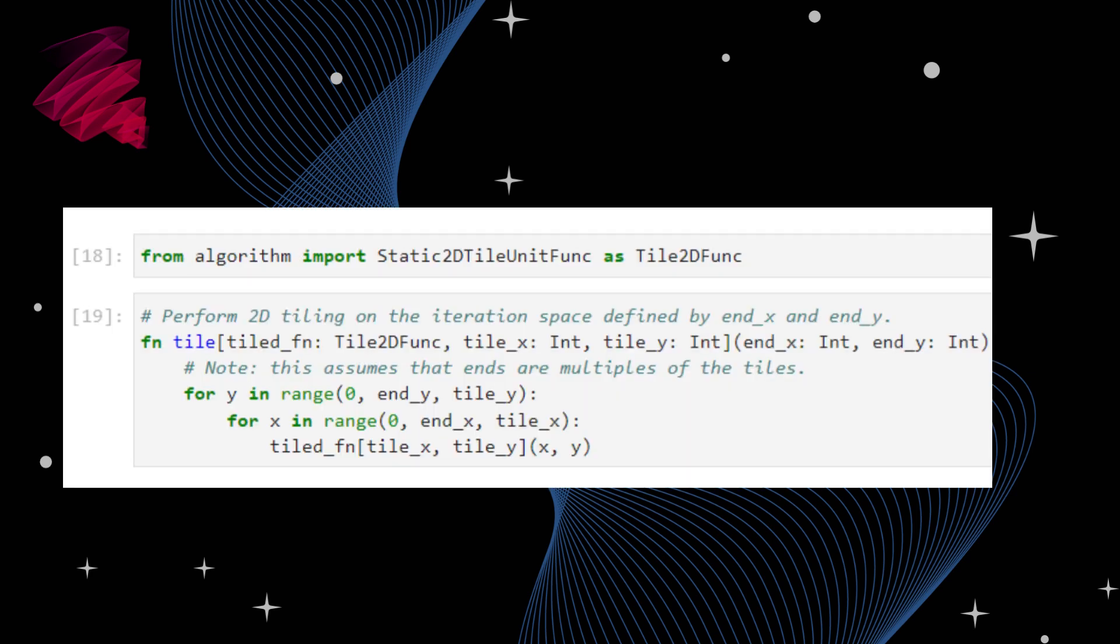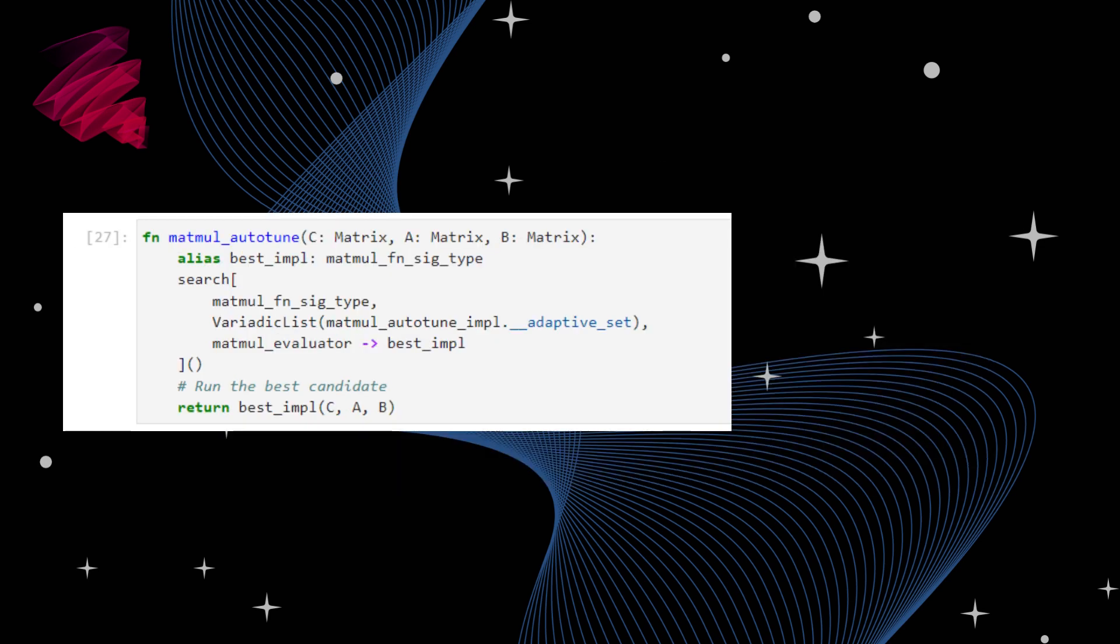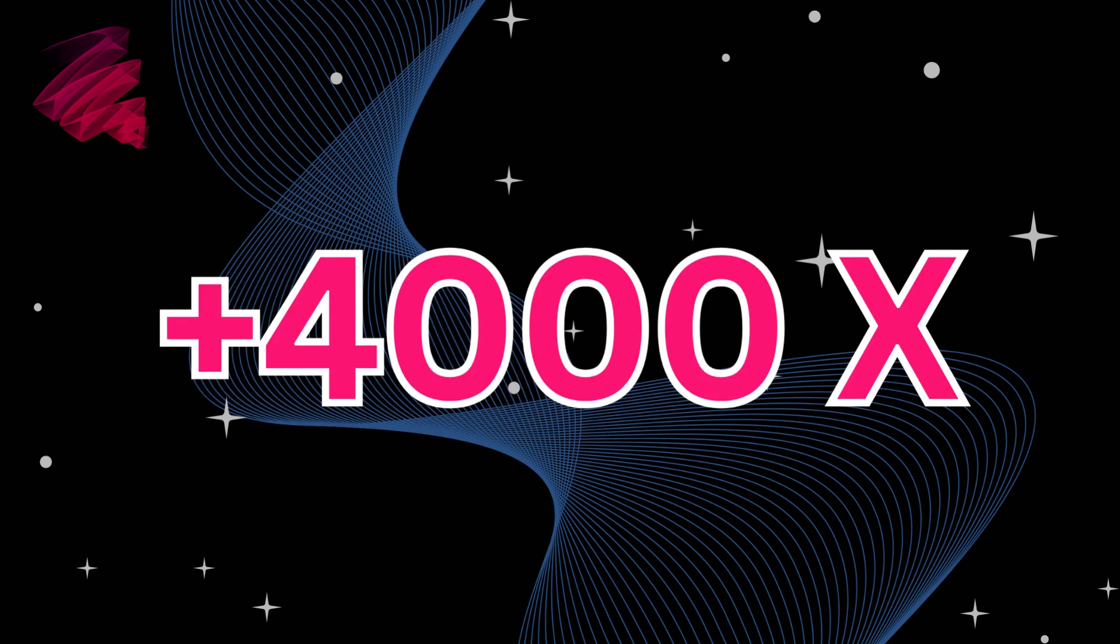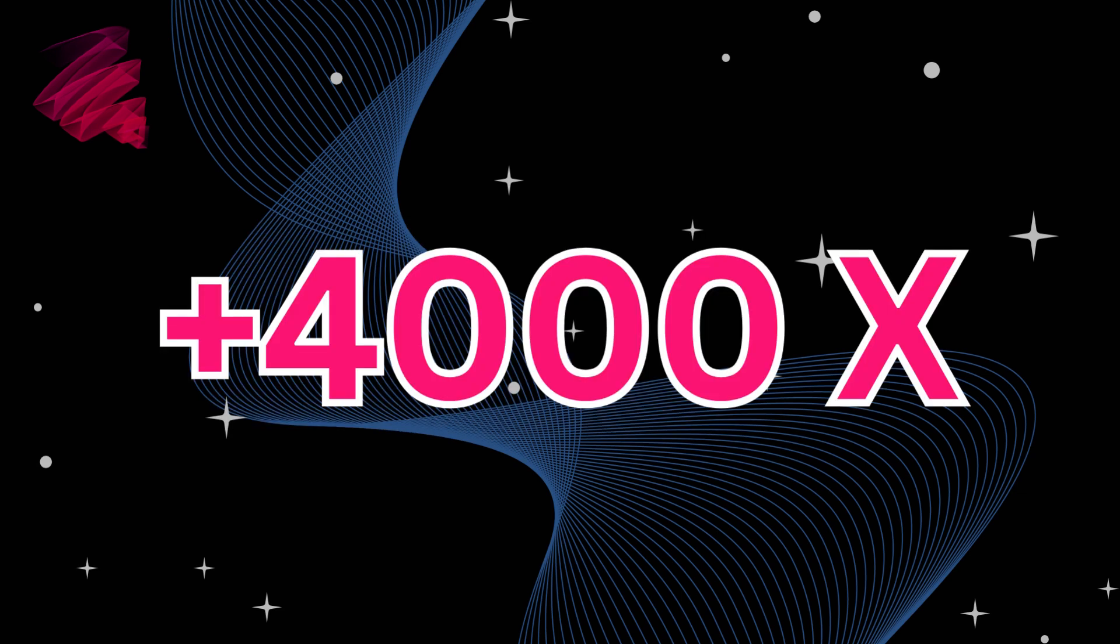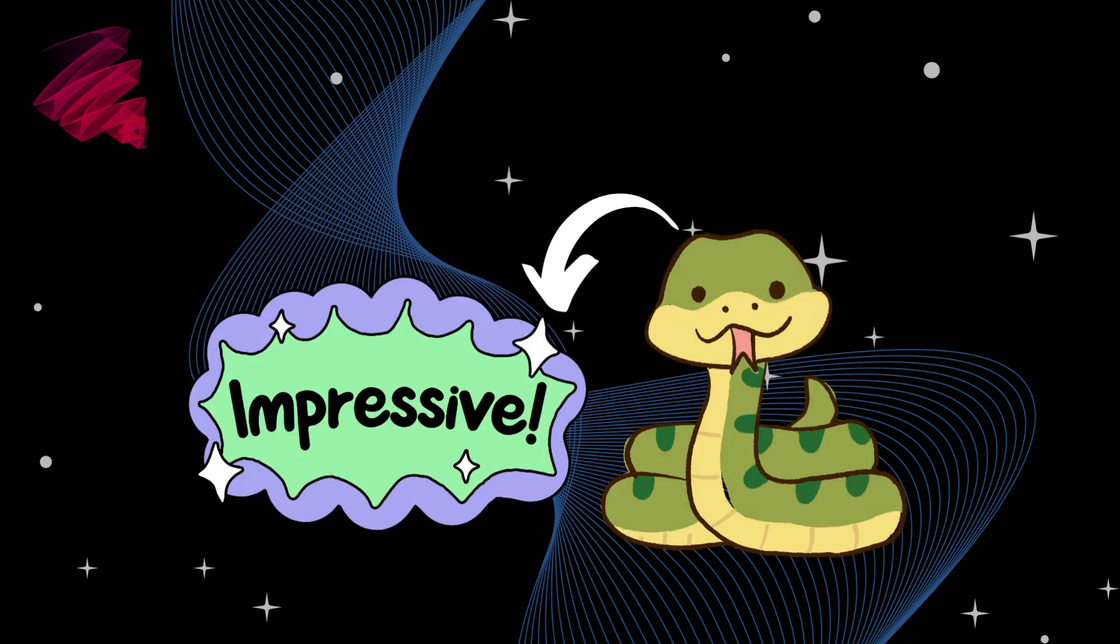It is using tiling for caching, which makes it reuse the data in a very effective manner. And there is an auto-tune feature, which helps to find the optimal parameters for the underlying hardware and for execution. And which makes it 4000 times faster. Now even Python will say it is impressive, right?